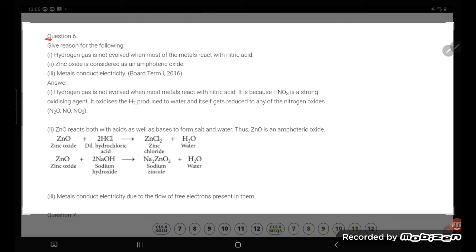Students, let's try to understand question number six. Give reason for the following: First one, hydrogen gas is not evolved when most of the metals react with nitric acid. This is what the question. What is the reason?